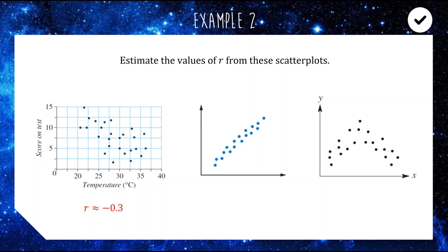If you said anything around negative 0.2 to negative 0.4, you probably get a pass mark for that. For the second one, it is positive and it's pretty consistent — almost making a straight line. I'd be putting that close to positive 0.9.